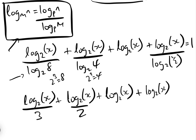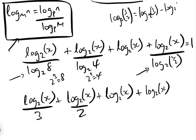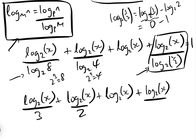Plus log to the base two of x over this term here. Let's look at log to the base two of a half: it equals log to the base two of one minus log to the base two of two. Any log of one is zero, and log to the base two of two is one, so log to the base two of a half equals minus one.